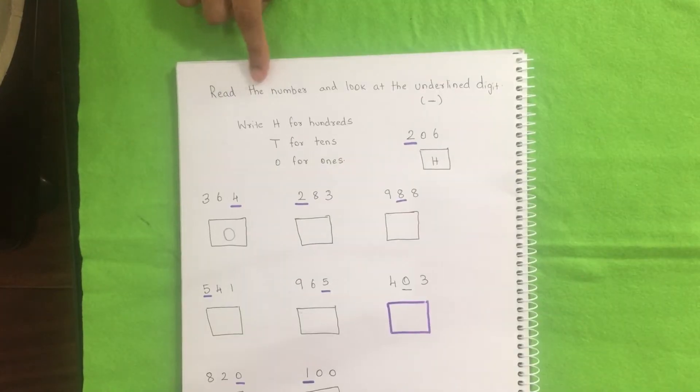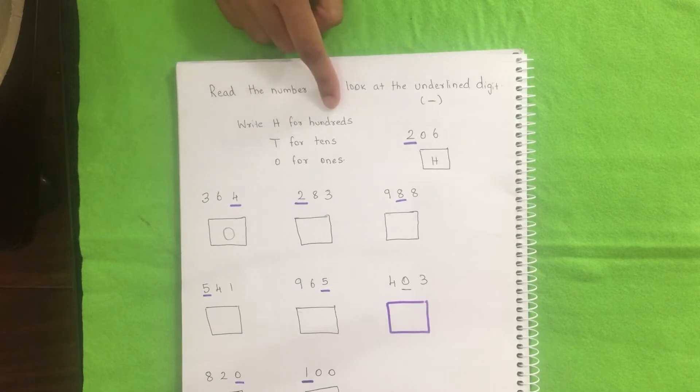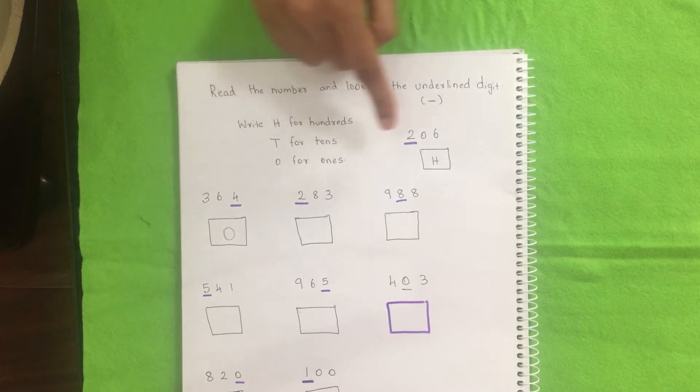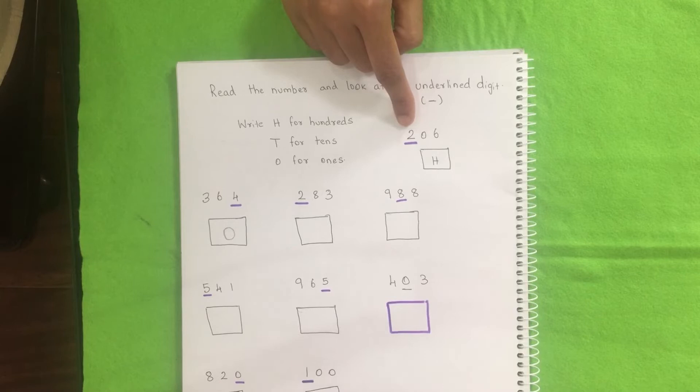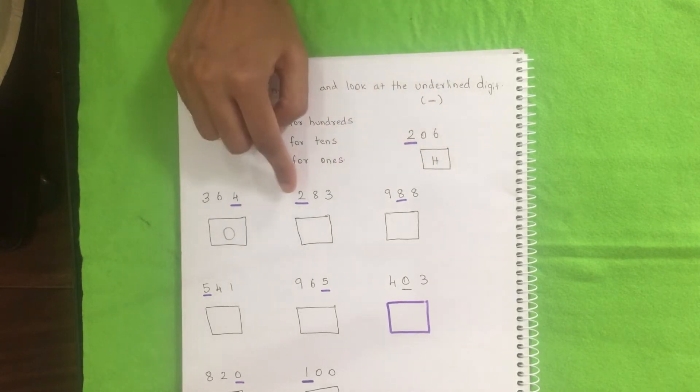The activity is read the number and look at the underlined digit and we need to write H for hundred, T for tens, O for ones. For example the number is two hundred and six. I have underlined two here. We need to ask the kid what is the place value for this. So we say it as two hundred. So we need to write H inside the box for hundred. Okay. Can you do this Arav?